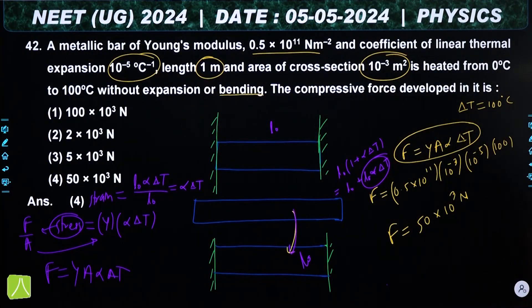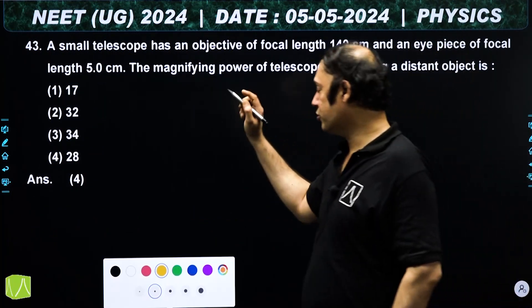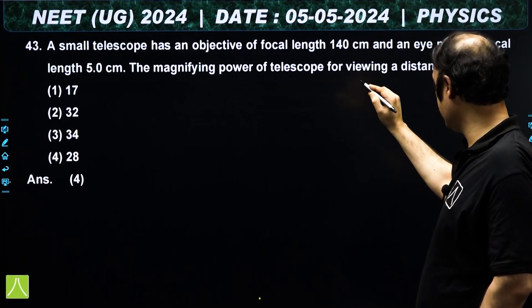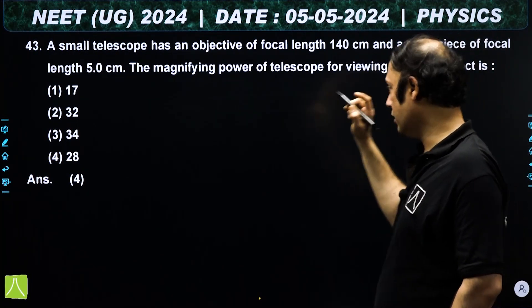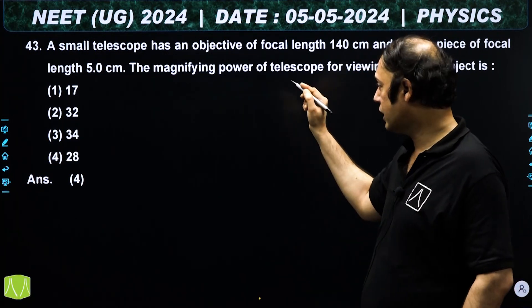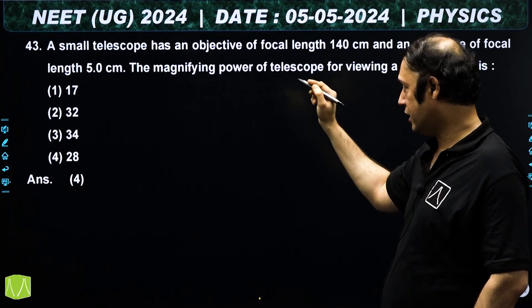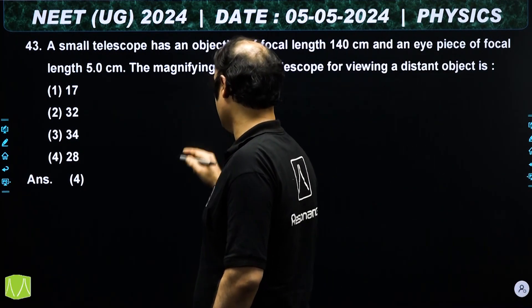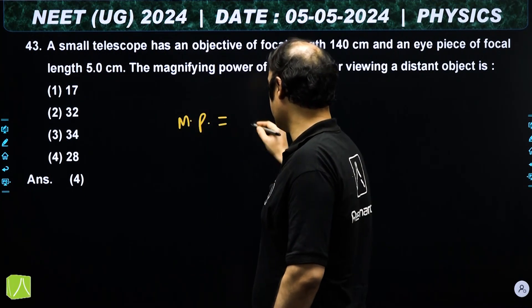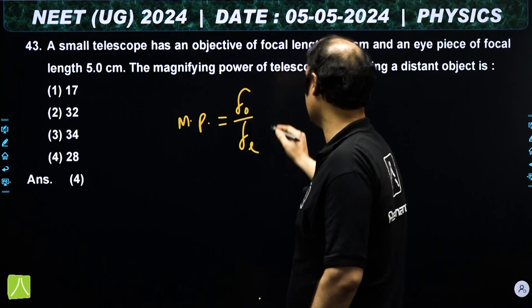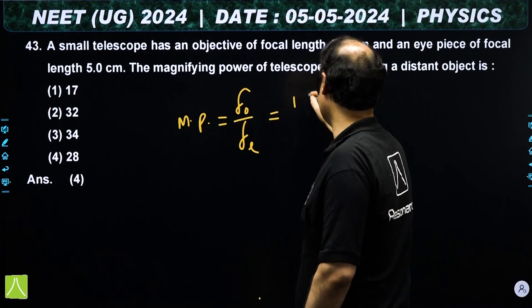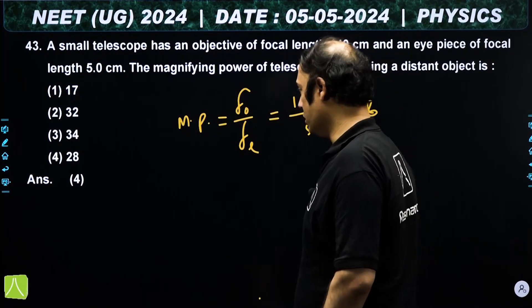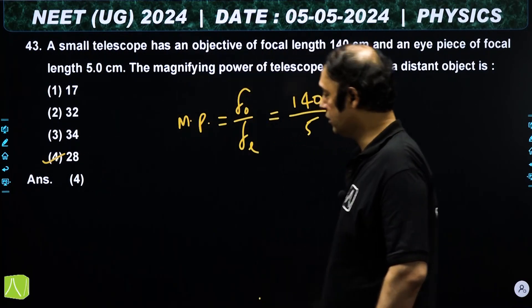Question 43: a telescope is given with objective lens focal length f₀ = 140 and eyepiece focal length fₑ = 5. Since no object distance is given, the telescope is in normal configuration. Magnification = f₀/fₑ = 140/5 = 28. The fourth option is correct.